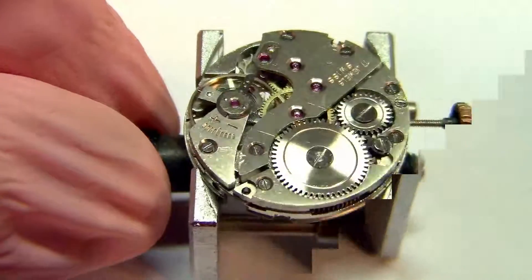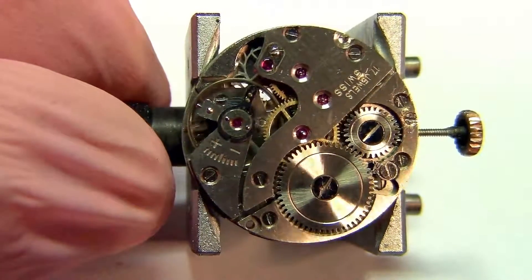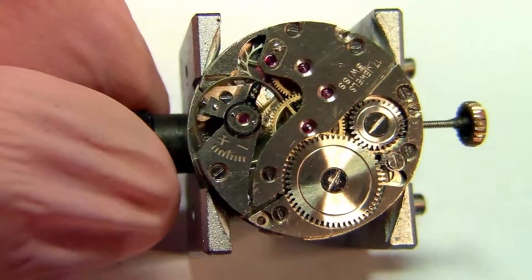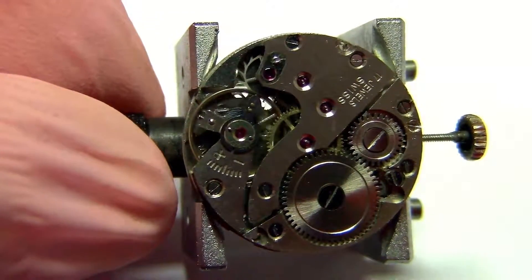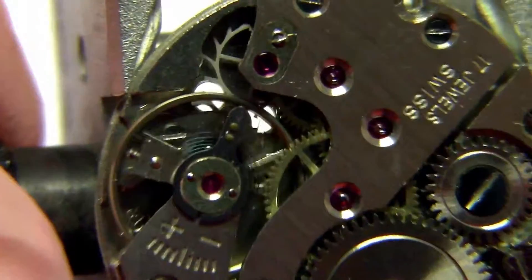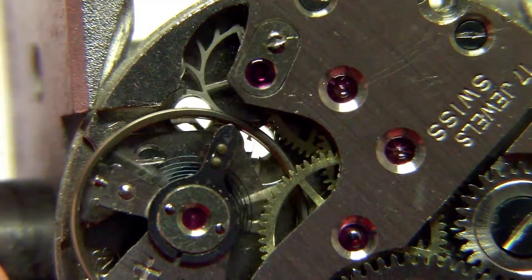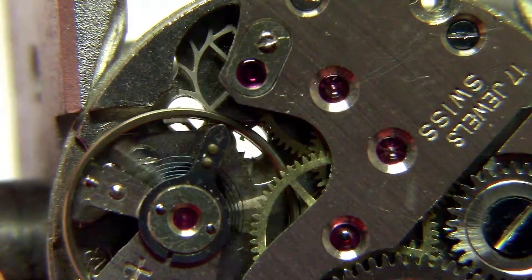Now back with the balance wheel in place, you can see how the energy from the mainspring is now controlled by the back and forth movement of the balance wheel. As you can see, the spinning speed is much lower because it's now controlled by the pallet fork.